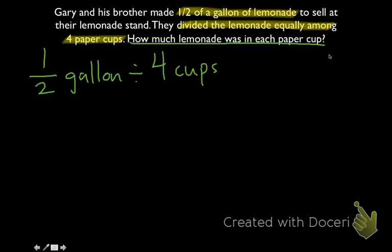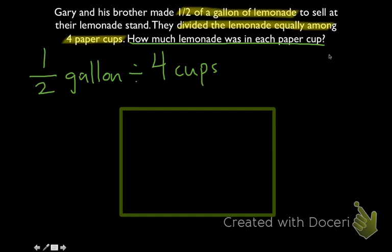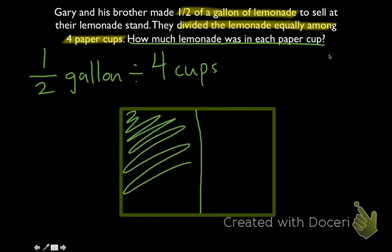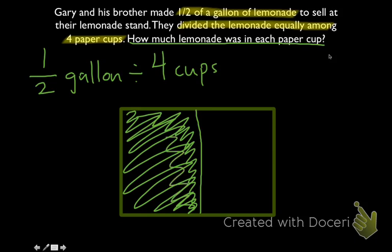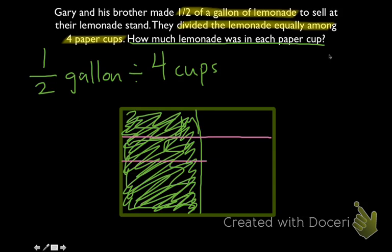We're trying to figure out how much lemonade was in each paper cup. So one way we can do that is to draw a model. So let's say that's our model here. We want to show we have 1 half. So of our whole, I'm going to shade in 1 half. It's going to represent 1 half of a gallon. Now we're seeing that they're going to divide the lemonade equally into 4 paper cups. So let's take our whole and divide it equally into 4. 1, 2, 3, 4.